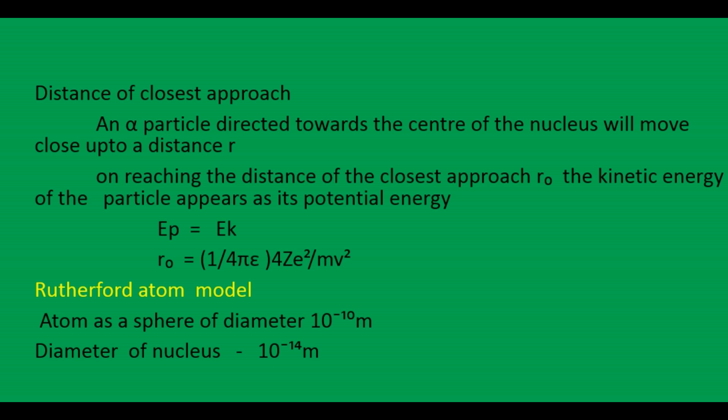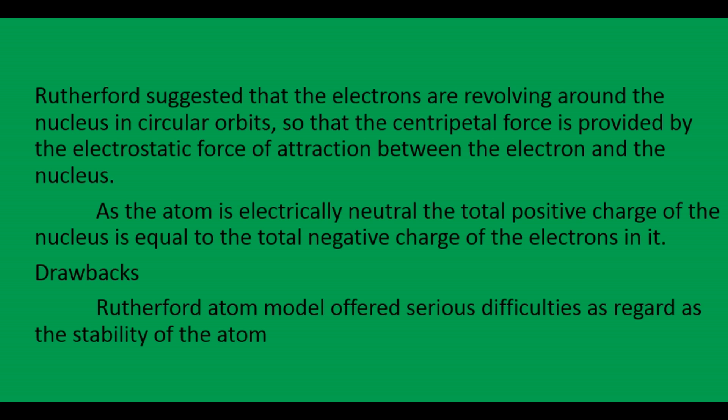The electrons in the atom are distributed around the nucleus in the empty space of the atom. If the electrons were at rest, they would be attracted and neutralized by the nucleus. To overcome this, Rutherford suggested that electrons revolve around the nucleus in circular orbits, where the centripetal force is provided by the electrostatic force of attraction between the electron and the nucleus.